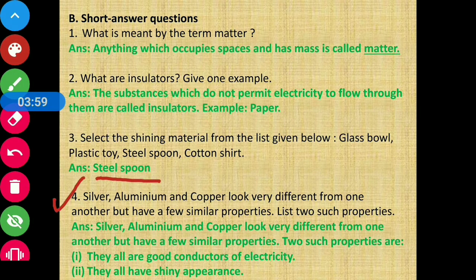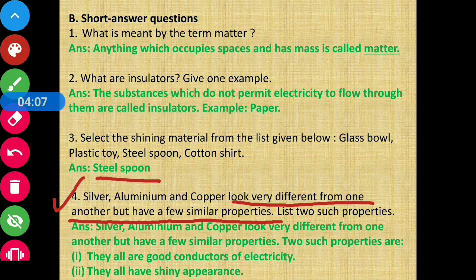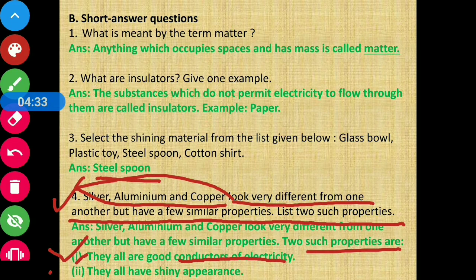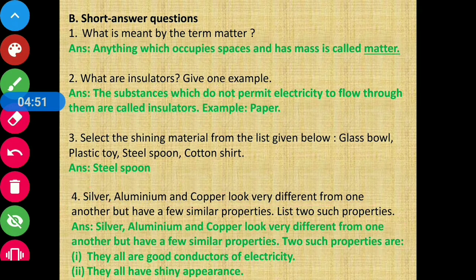Question number 4: Silver, aluminium, and copper look very different from one another but have a few similar properties. List two such properties. Answer: First, they are all good conductors of electricity. Second, they all have a shiny appearance. Since all three are metals, they share these common properties of being shiny and being good conductors of electricity.